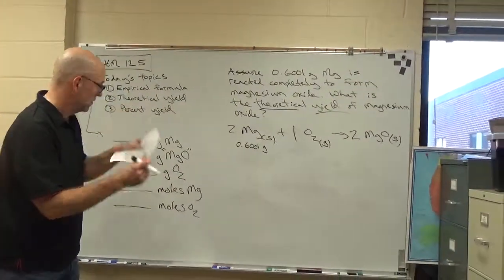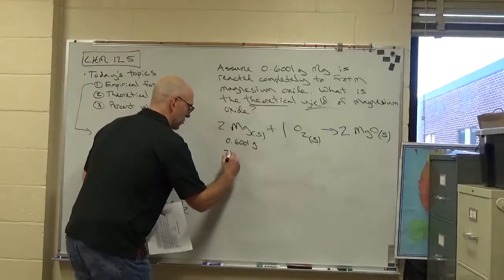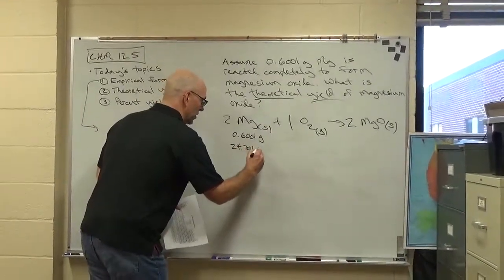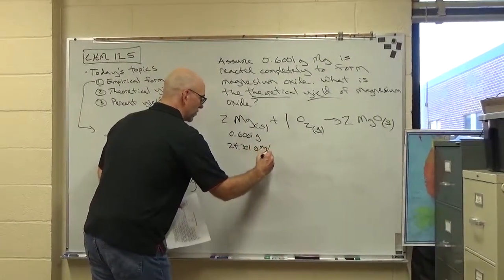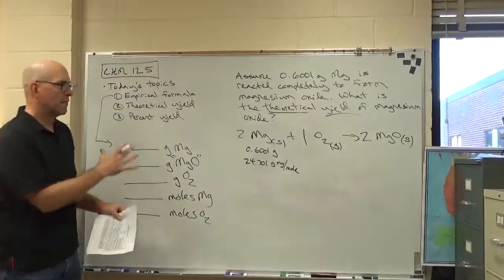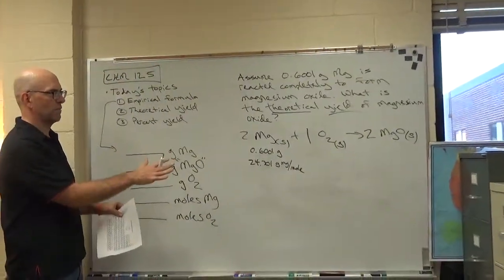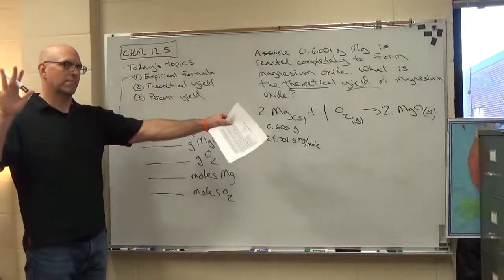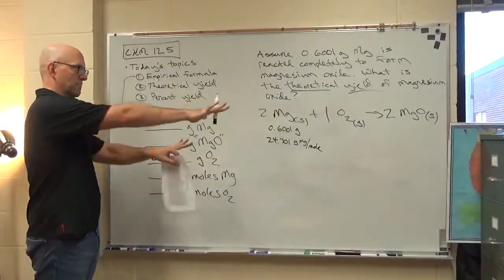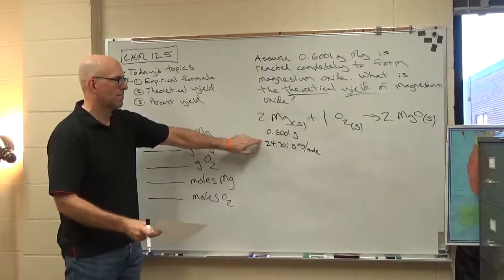In this case, my periodic table is 24.301 grams of magnesium per mole, just so I have it there. Probably not necessary to do this for this simple problem. We get into more complicated problems, this is a good bookkeeping procedure. I've got my mass and my molar mass right there.